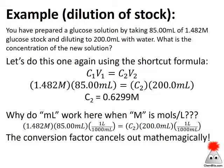Let's just look back at that exact same problem, and this time plug numbers into the formula. So C1V1 equals C2V2, same problem. I've got 1.482 molar solution, that's my C1. V1 is 85 milliliters of that. C2 is what I'm trying to find. V2 is 200 milliliters, and boom, I end up with 0.6299 molar. Milliliters cancels out, so we're left with molarity as our concentration unit.